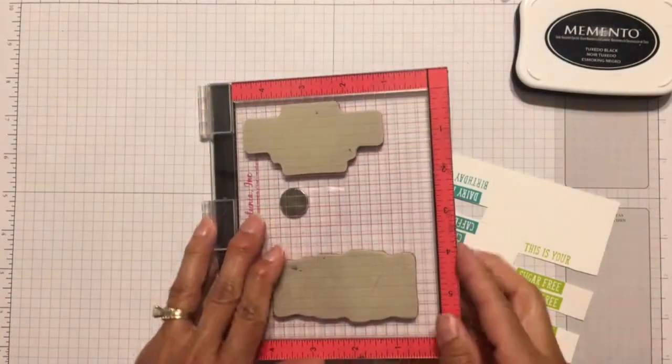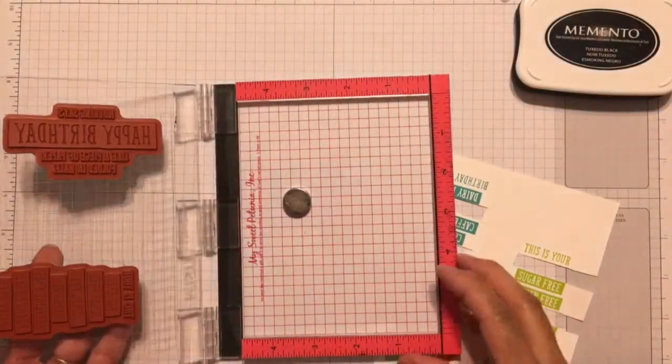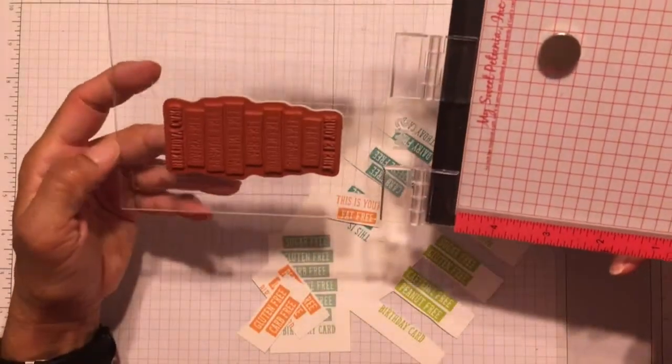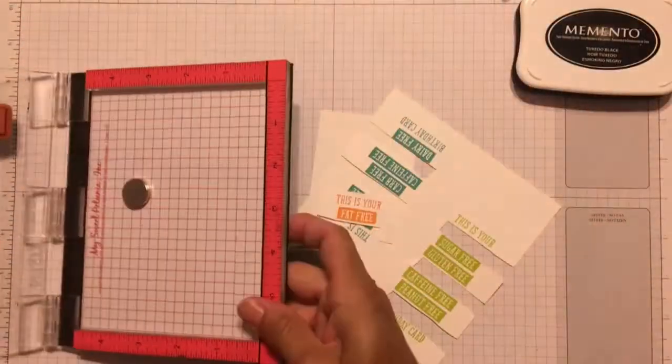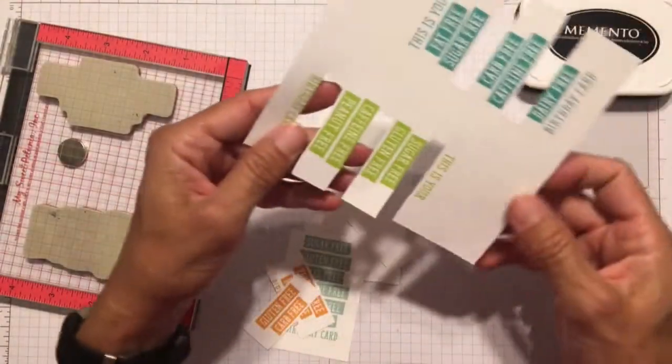I'm attaching this to the card base with fast fuse as well. It's funny the things that you don't think about until you watch the video. And I noticed that at this point I could have sandwiched the acetate in between the frame and the card base. The way I did it doesn't look too unsightly on the inside, but this is definitely an option.